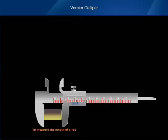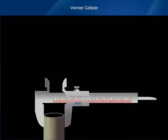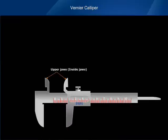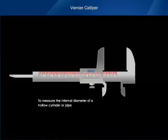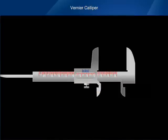The upper jaws are inside jaws and are used to measure the internal diameter of a hollow cylinder or pipe. There is a thin long strip T attached to the vernier strip at the back of the main scale.